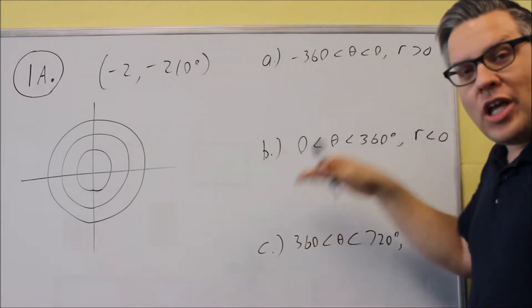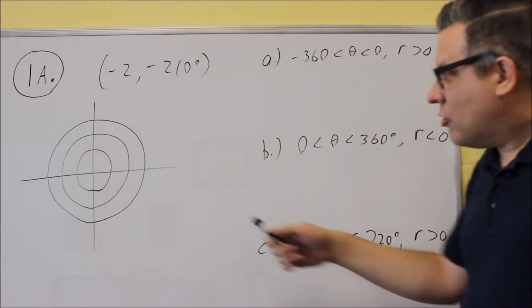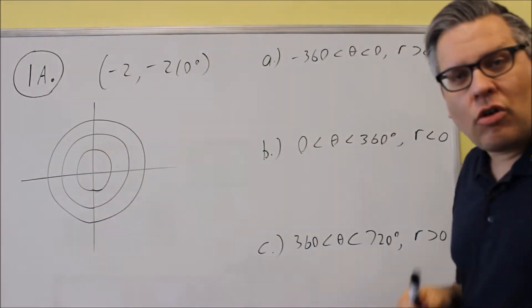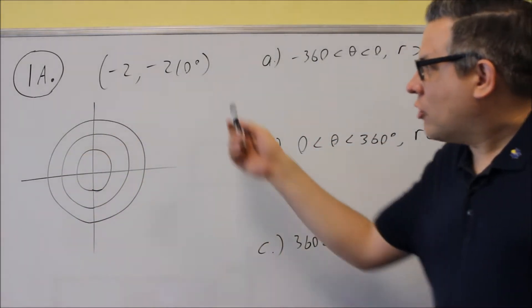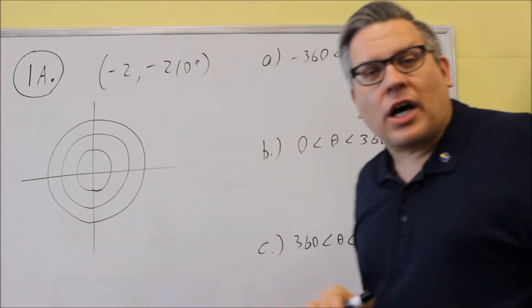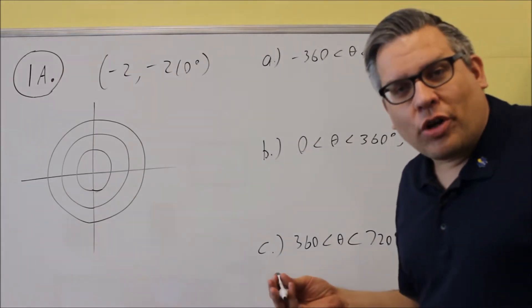All your answers for A, B, and C should allow you to draw the same and get to the same place on the grid. So you can always do that to check your answer once we plot this original one. Our answers for these should allow us to get to the same spot when we plot that on the polar grid.